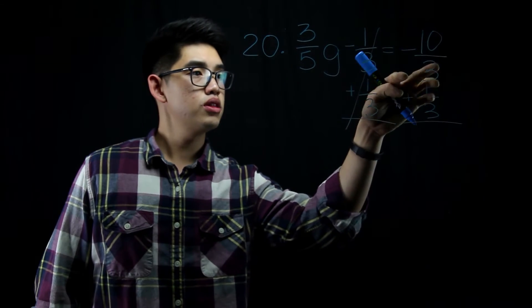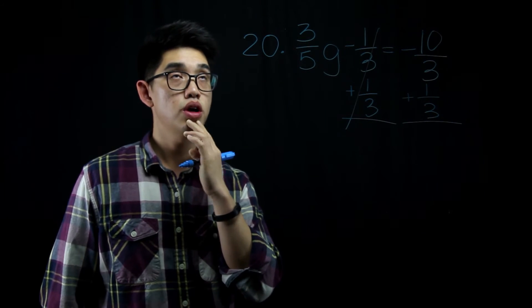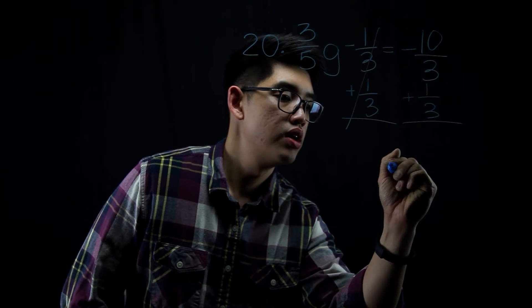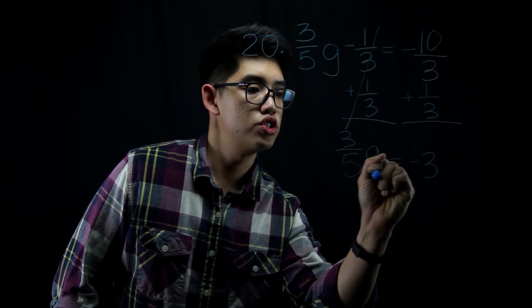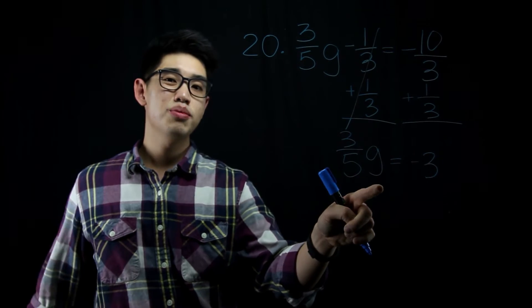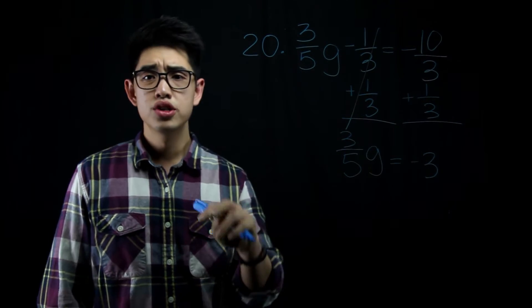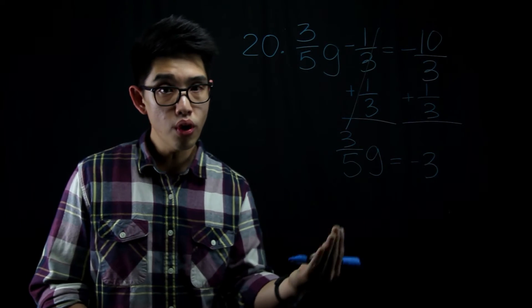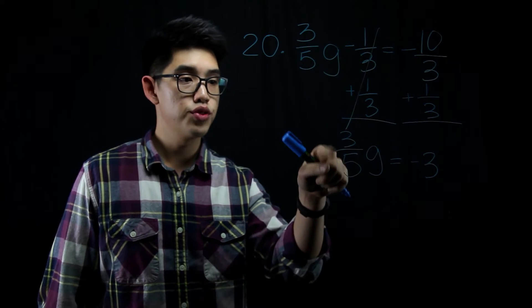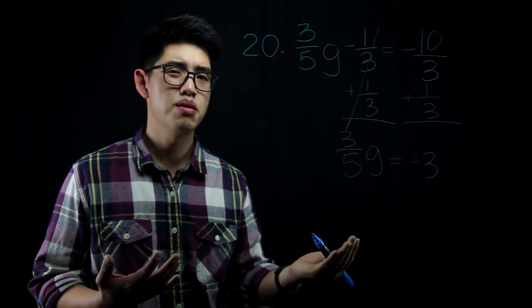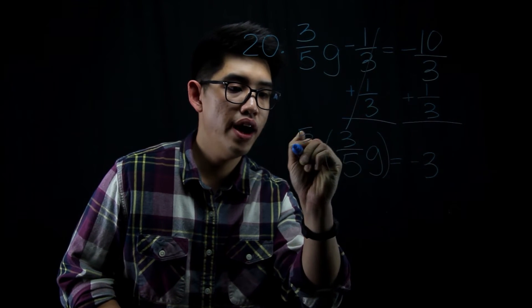Negative 10 thirds plus 1 third, that's going to be negative 9 thirds or negative 9 divided by 3. That's just negative 3. I can drop down to 3 over 5g. And then I want to get g by itself, but it's being multiplied by 3 fifths. You could divide both sides by 3 fifths, or you could multiply both sides by the reciprocal of 3 fifths, which is 5 over 3. I'm going to multiply both sides by 5 over 3.